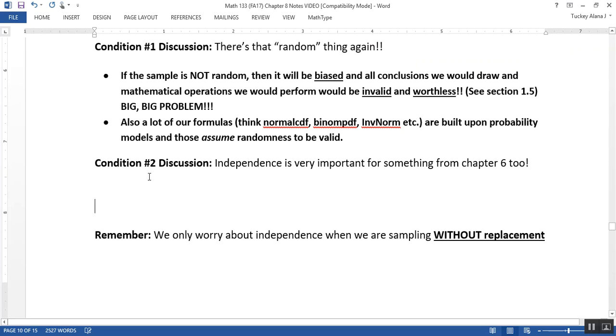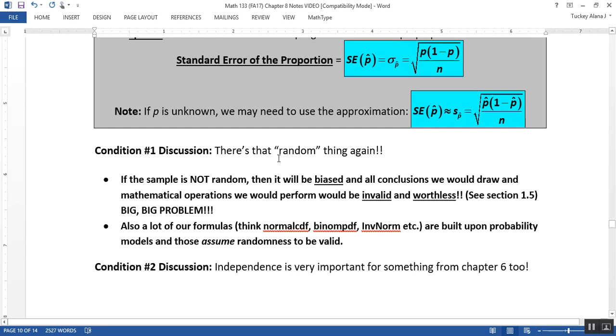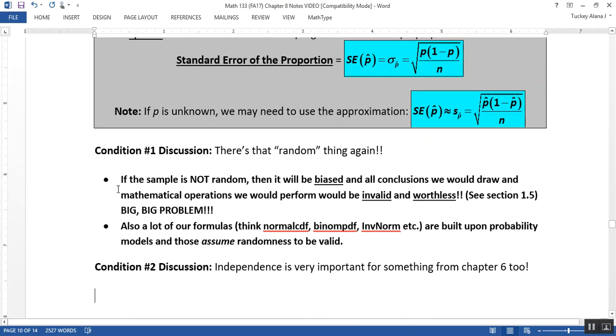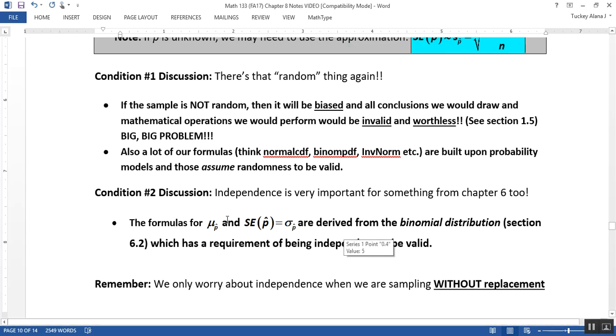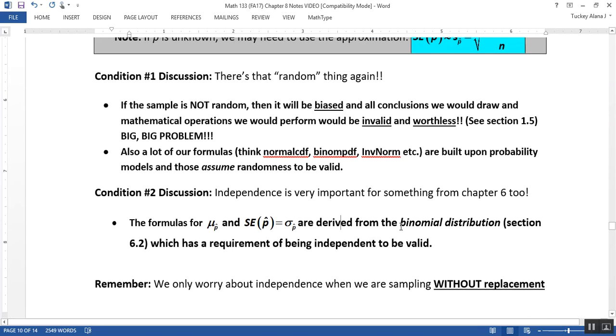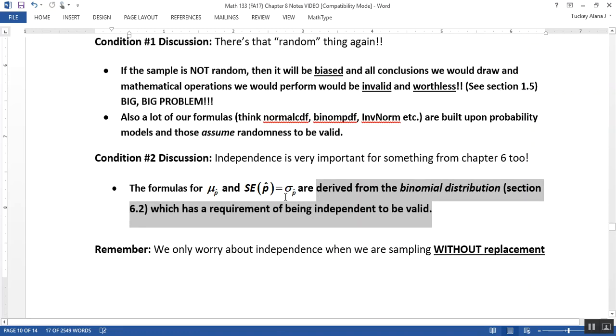Now independence is a big deal for similar reasons. You don't want to bias your sample, but also these probabilities, these formulas particularly for standard error and center, are built off the binomial distribution. If you don't have the binomial distribution, which requires independence, then you don't have those formulas. The formulas for the mean, mu sub p-hat, and standard error of p-hat are both derived from the binomial distribution in section 6.2. If you don't have independent observations, then you don't have the binomial distribution, and those formulas would be invalid.